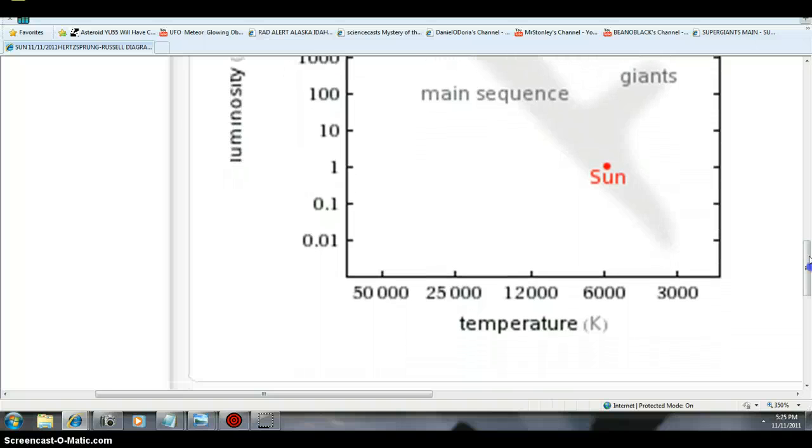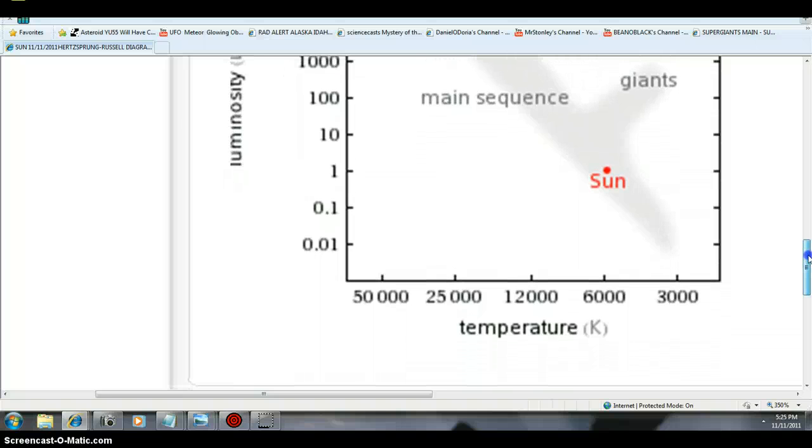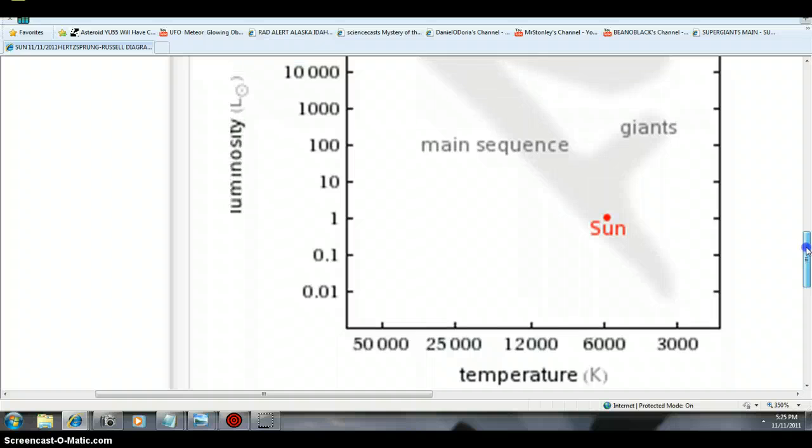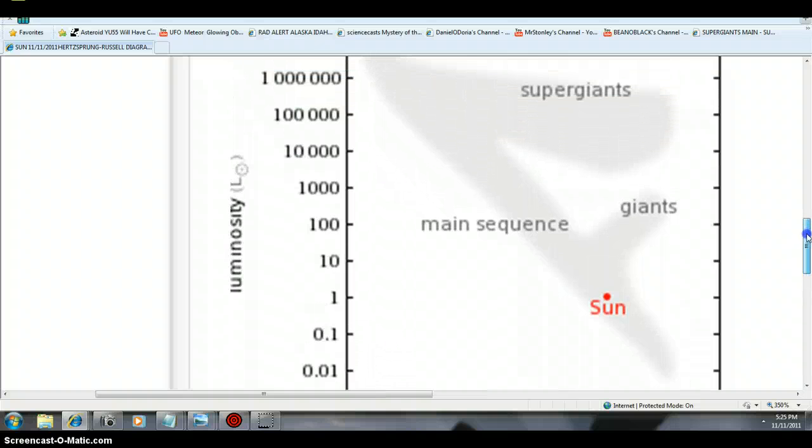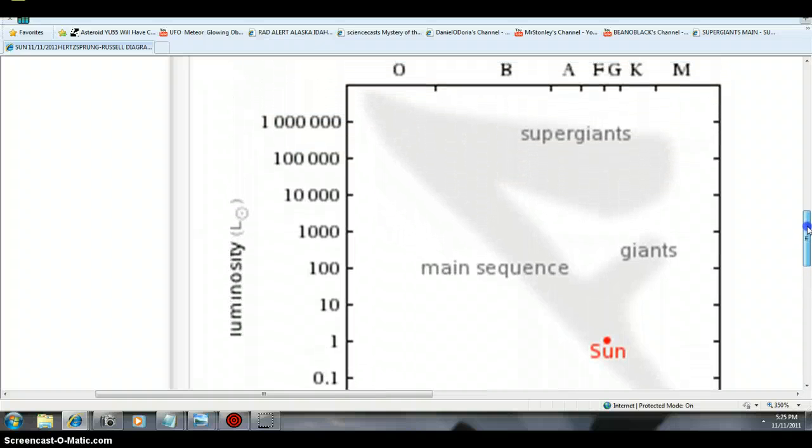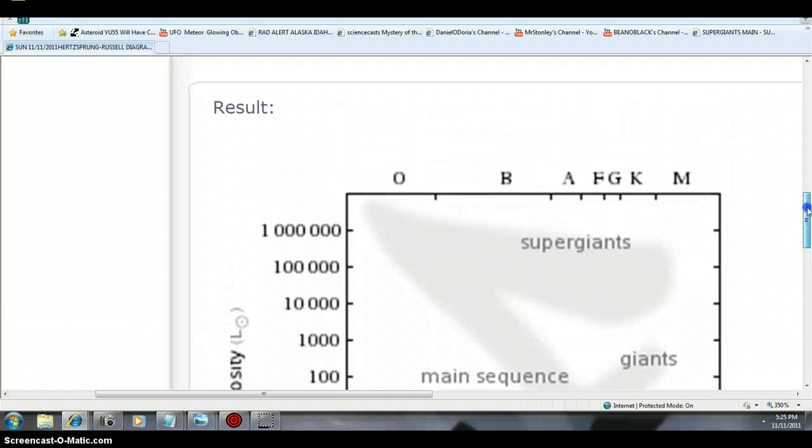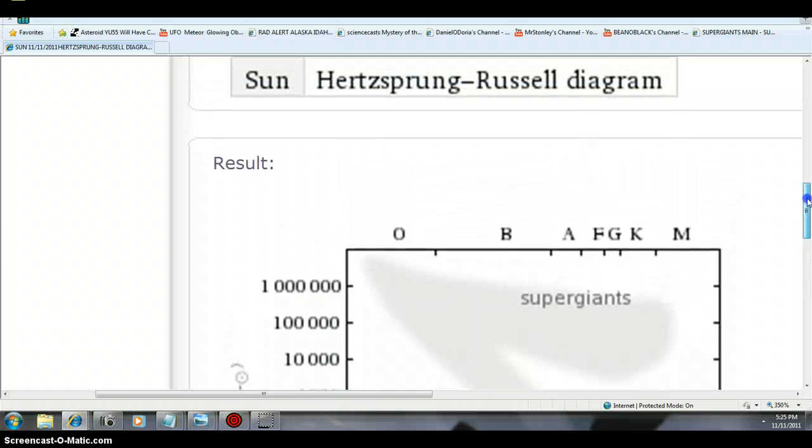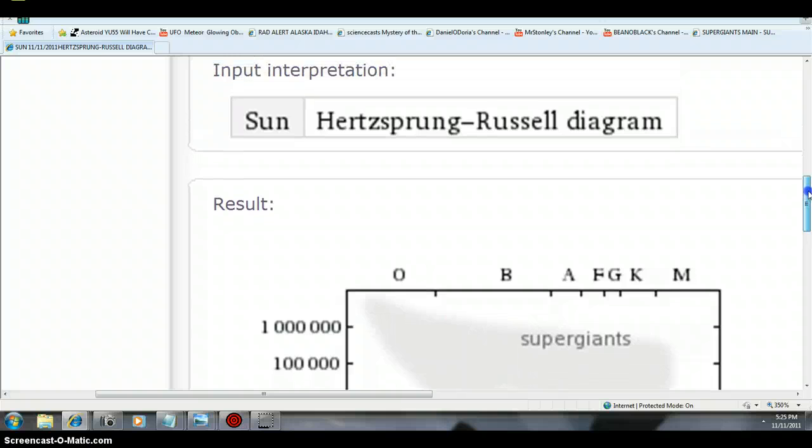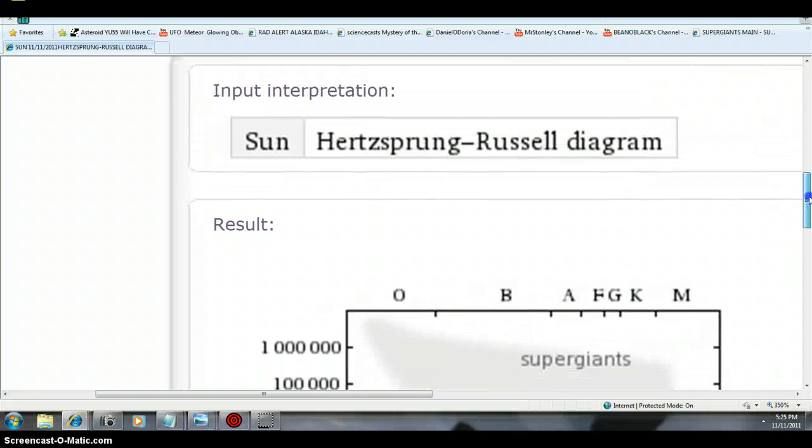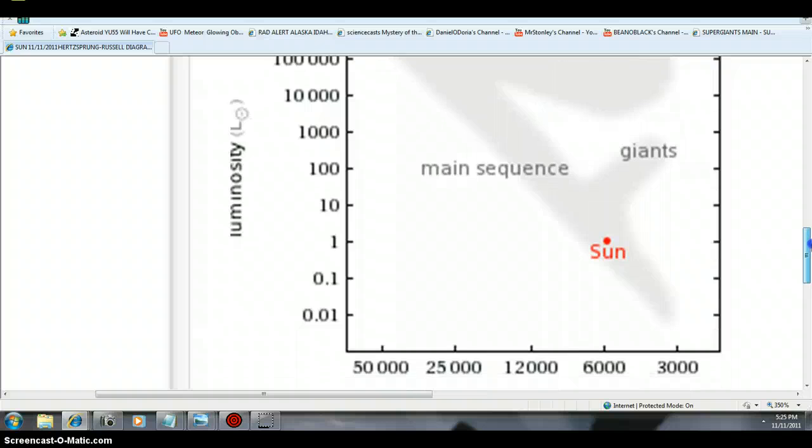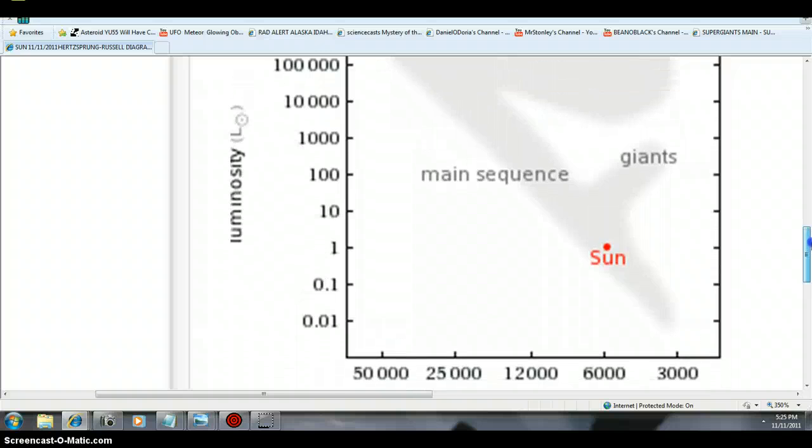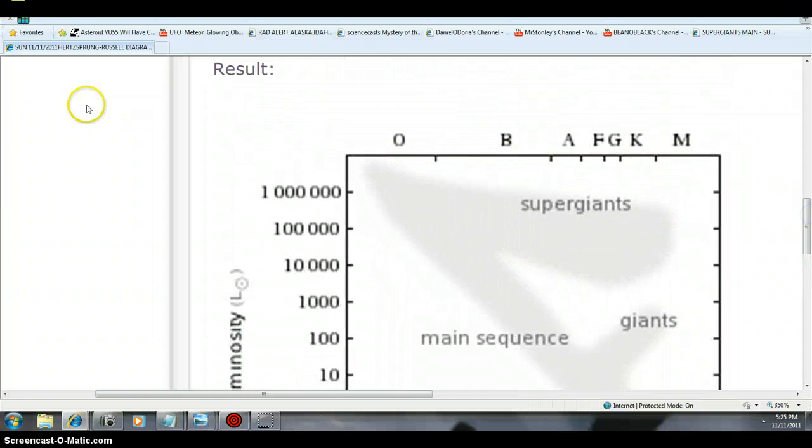The sun is in the supergiants main sequence, okay? No scientist, no astronomer, scientist is going to argue with you because they can't argue with data. Real, that's right, Hertzsprung-Russell diagram, hard data, okay? The sun is in the supergiants, folks. The world leaders and everything can't lie to you anymore. Sun's there.